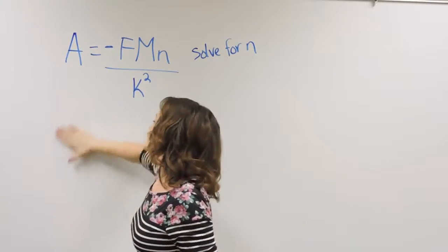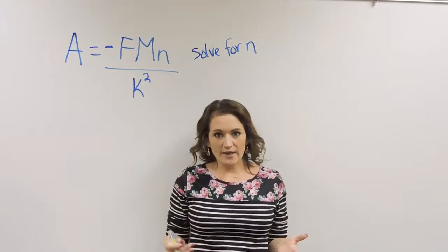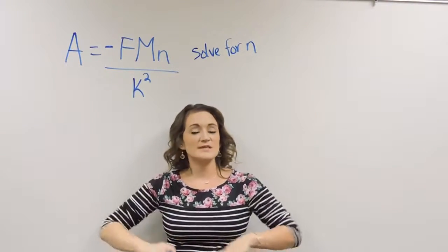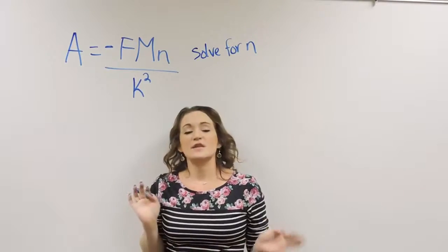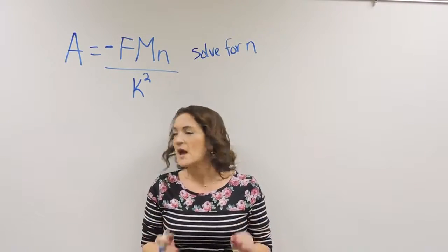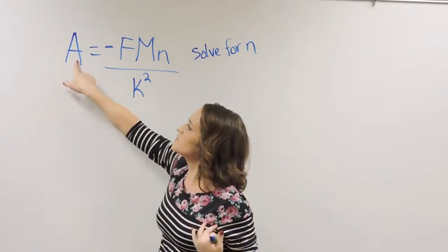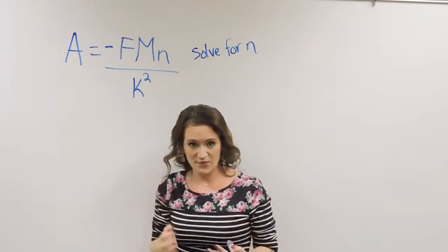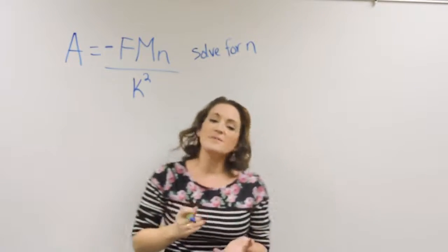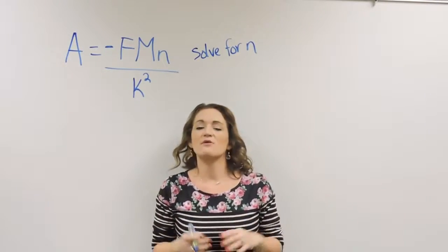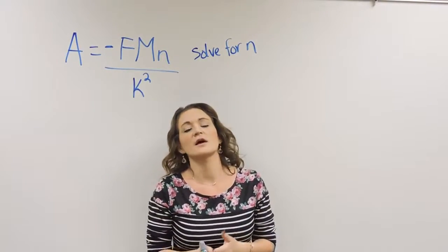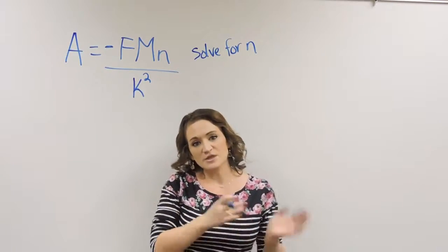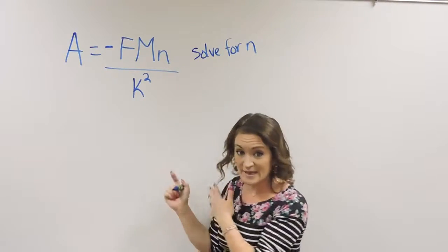So every once in a while we're given some kind of equation or something like that. Maybe it's a known equation that's set to solve a specific thing, but we may not want it actually solved for what it is typically solved for. We may want it solved for something else. So we have to maybe know how to move some things around. How do we rearrange the formula so that it is set up to solve for what we're needing?